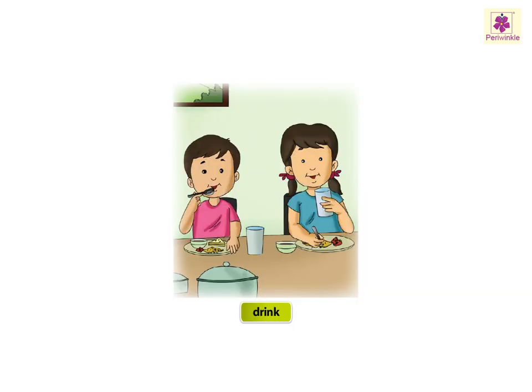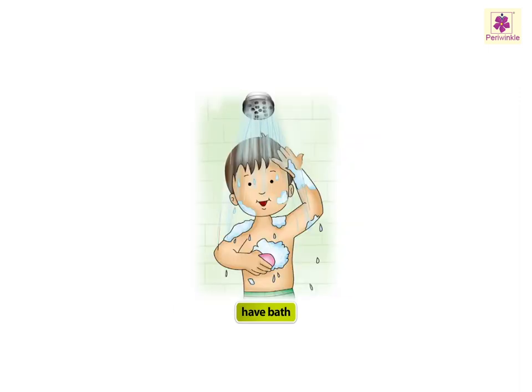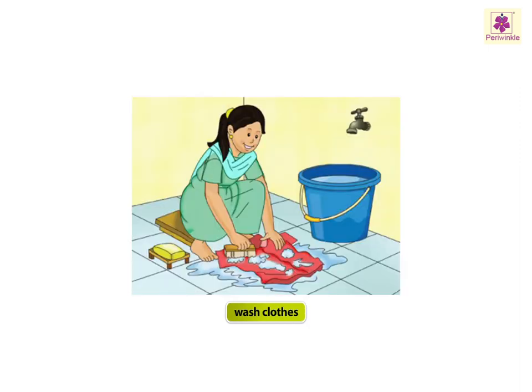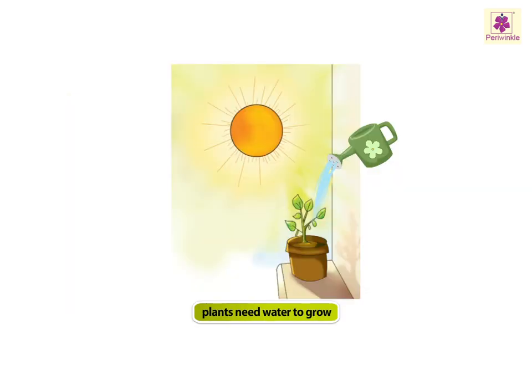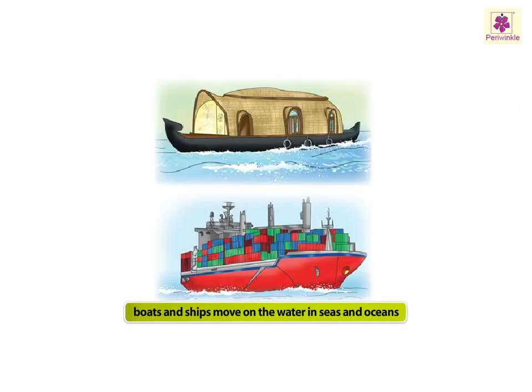We drink water when we are thirsty. We use water to bathe and clean ourselves. We use water to wash our clothes and for cooking. Plants need water to grow. Boats and ships move on the water in seas and oceans.